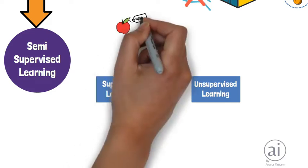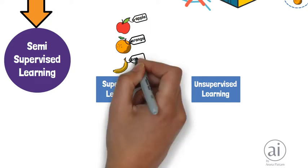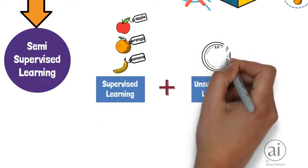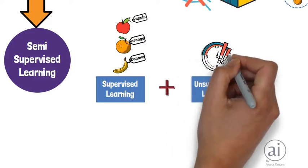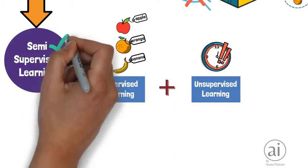In supervised learning, labeling of data is manual work and is very costly as data is huge. In unsupervised learning, the areas of application are very limited. So to reduce these problems, semi-supervised learning is used.